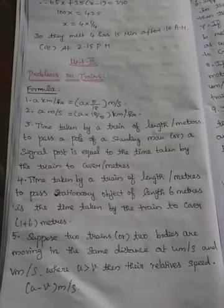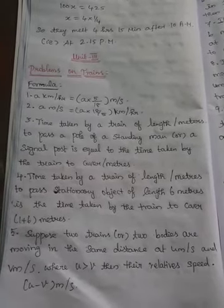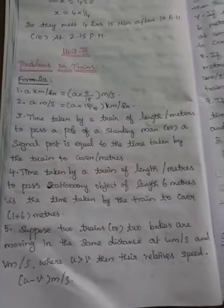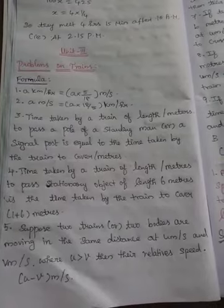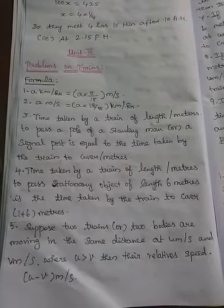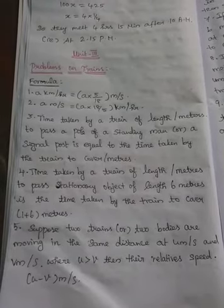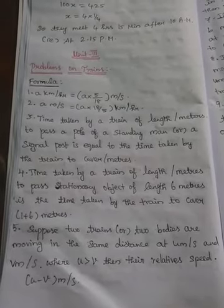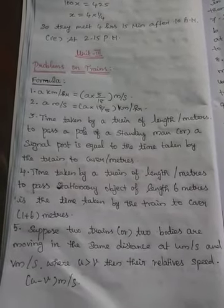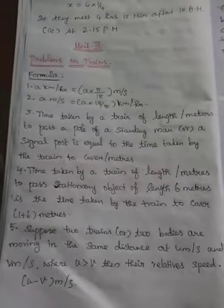Suppose two trains or two bodies are moving in the same direction at u meter per second and v meter per second, where u is greater than v, then the relative speed is u minus v meter per second.